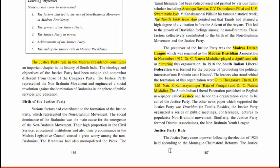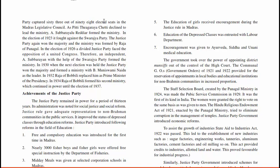Regarding the Justice Party Rule: the Justice Party came to power following the elections of the 1920s held according to the Montagu-Chelmsford Reforms. The Justice Party captured 63 out of 98 elected seats in the Madras Legislative Council. As P.T. Thyagaraya Chetty declined to lead the Ministry, Subarayalu Reddiar formed the Ministry. In the election of 1923, it fought against the Swaraj Party and the Justice Party again won the majority, and the Ministry was formed by the Raja of Pangal.